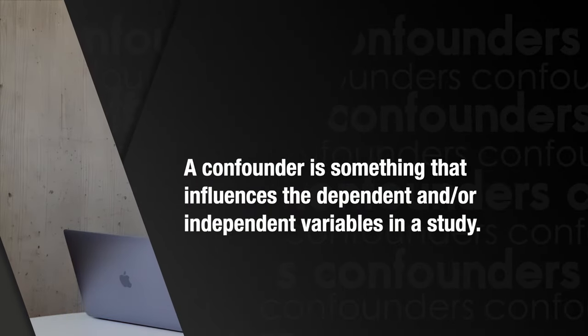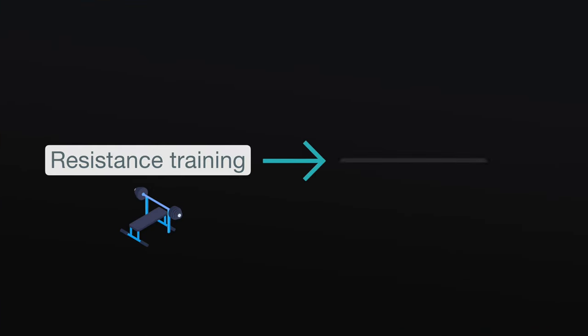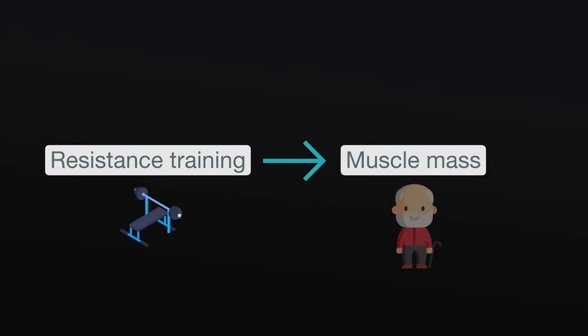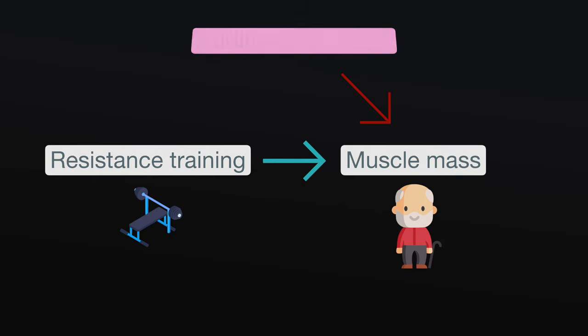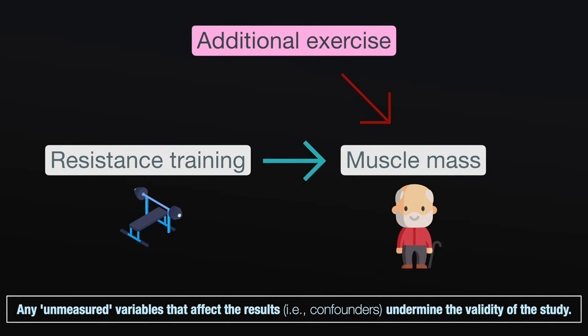The demographic information will also mention if people were excluded from the study. Most often the reason is the existence of a confounder — a variable that would in some way influence the results. For example, if you study the effect of a resistance training program on muscle mass in a group of frail older adults, you wouldn't want some of the participants to be taking muscle-building supplements while others didn't, because it might affect your results. Likewise, you wouldn't want some participants to exercise outside of the normal protocols of the study — you'll either want all of them to follow the same workout program, or you'll want none of them to exercise.